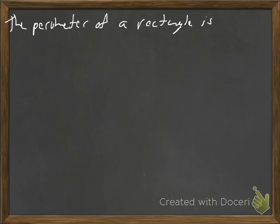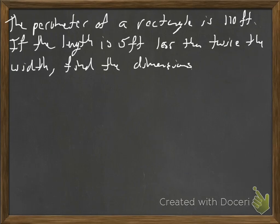Alright, let's do one more. I'm going to speed it up so we don't have to sit here forever. Alright, it says the perimeter of a rectangle is 110 feet. If the length is 5 feet less than twice the width. So the length is in terms of the width here. Find the dimensions.